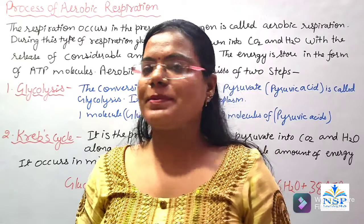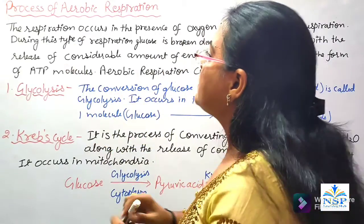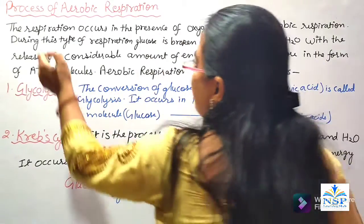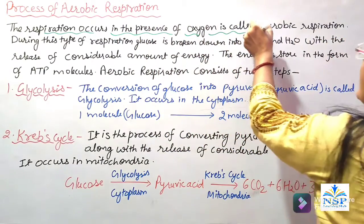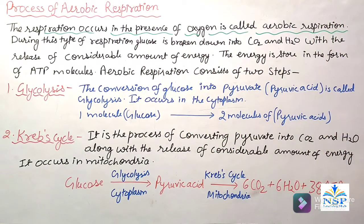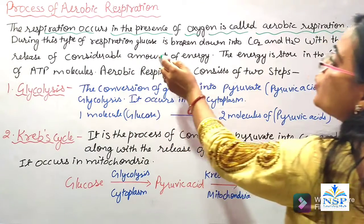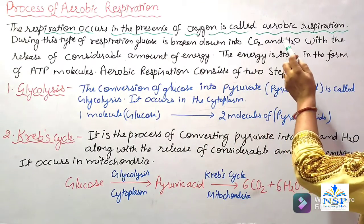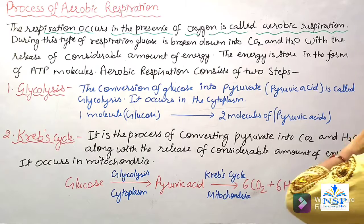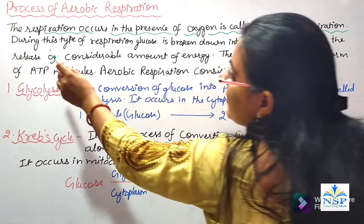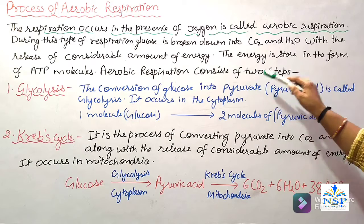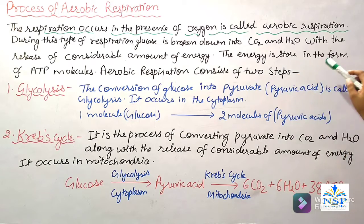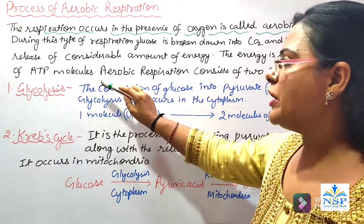Process of Aerobic Respiration. The respiration that occurs in the presence of oxygen is called aerobic respiration. During this type of respiration, glucose is broken down into carbon dioxide and water with the release of a considerable amount of energy. The energy is stored in the form of ATP molecules.